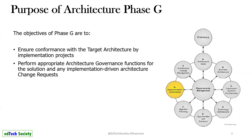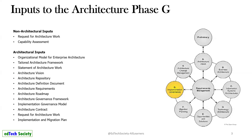If any governance is needed for whatever solution the entire team develops, a review will happen in this phase. The enterprise architect will do the review — guiding the development of the solution, deployment, and all these things. Finally, architecture governance also needs to be done here. But don't confuse this — this is an implementation governance phase. The entire development is finalized here, and the deployment finalization of the entire cycle also happens in Phase G.